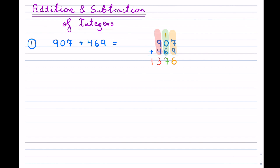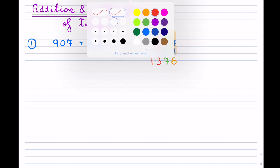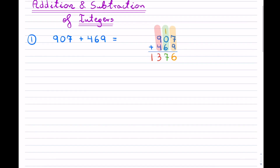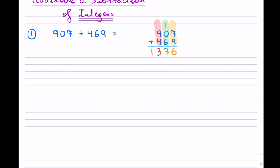This example is not that difficult but it still takes practice. Now what else can happen? The next example I'll give is similar but in this case what we have is negative 907 and I'm going to subtract 469.